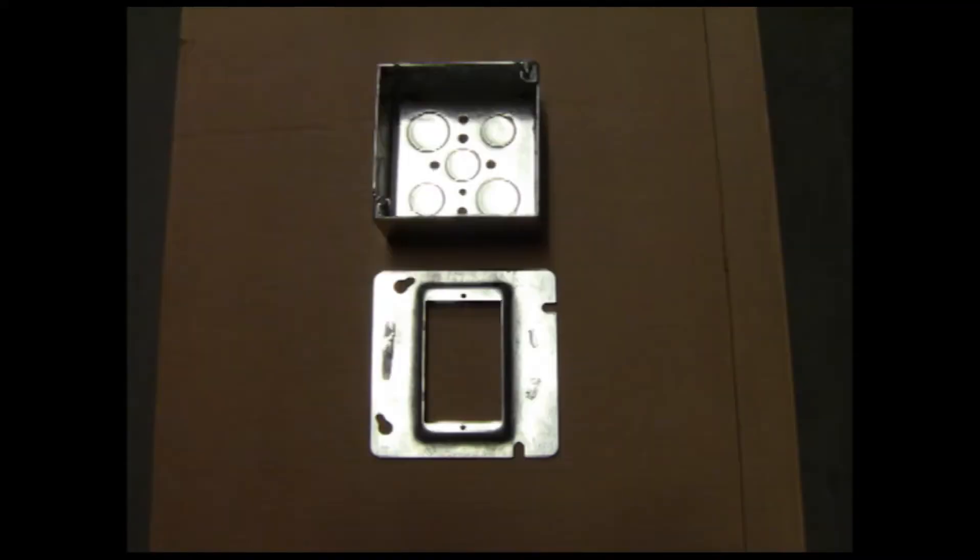Here, we see a four-square box with a single gang mud plate. This combination is used when a junction box is needed and the extra cubic inches allow for more wires to be pulled into the box.